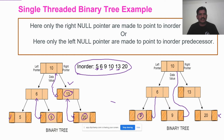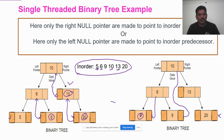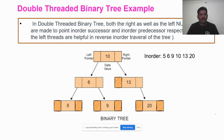In the single threaded binary tree, either we go for the left pointer or right pointer — left pointer is connected to the inorder predecessor and right pointer is connected to the inorder successor. For the double threaded binary tree, both the right as well as the left pointers point to the inorder successor and inorder predecessor respectively. The use of double threaded binary is that it can be used to traverse in reverse order.